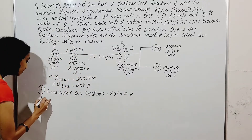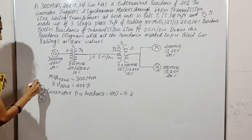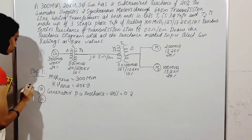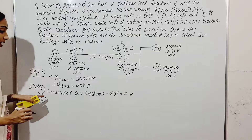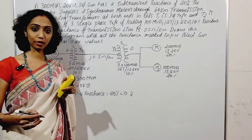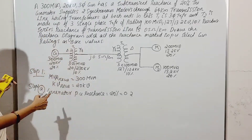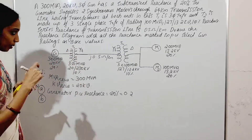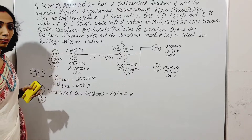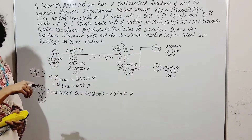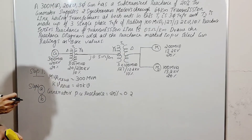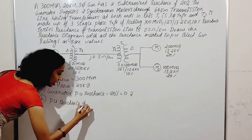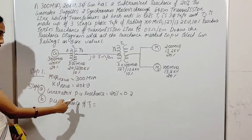Step 1: we choose the base values. Step 2: we choose the per unit reactances. So the per unit reactance of the generator is determined. Then we add transformer T1. For transformer T1 we also choose base values and then calculate the per unit reactance. So per unit reactance of T1 — here you use the formula X_PU new equals X_PU old into (KVB old / KVB new) squared into (MVA new / MVA old).